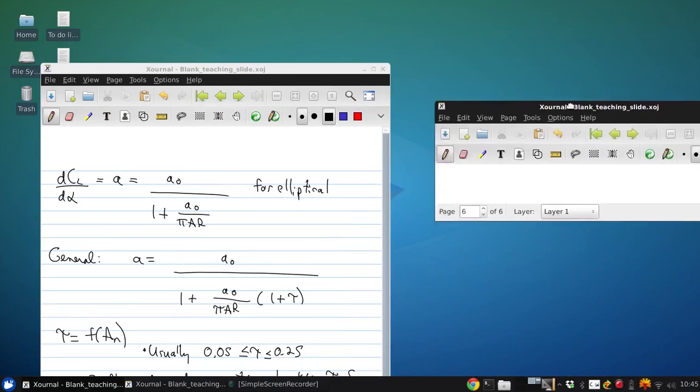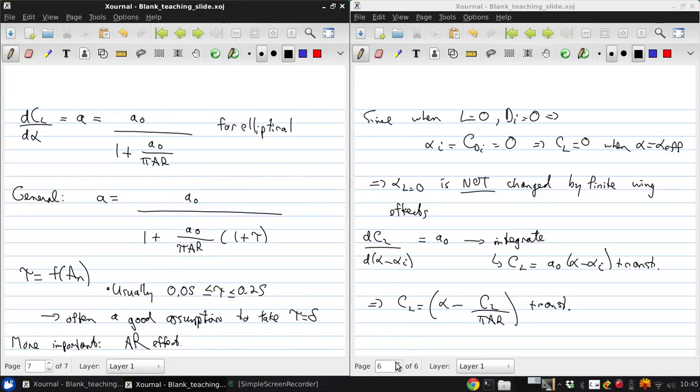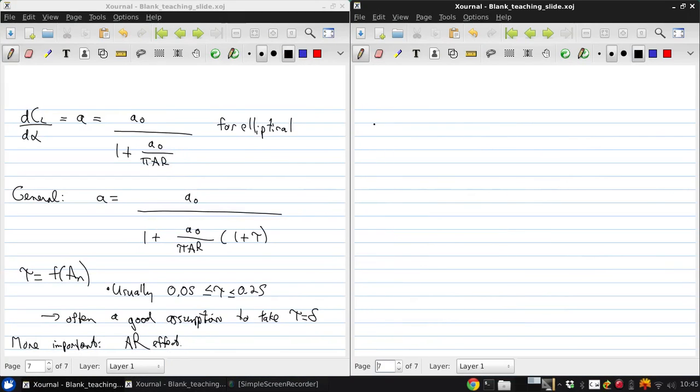So just to try to wrap all this back up and come back to what... Make sure we remember what we're doing with all this lifting line theory. Just some final thoughts before we move on to more advanced methods of calculating the lift and induced drag on finite wings. Remember that our model in lifting line theory is vortices which are distributed along the span. And then there's a trailing vortex sheet that results.